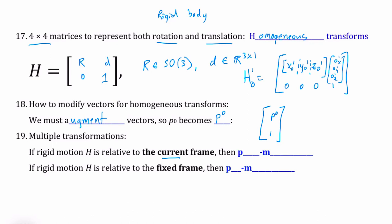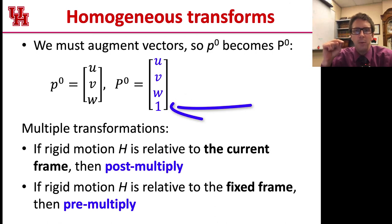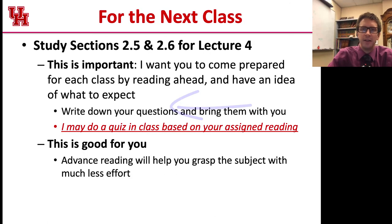Now we get to follow the same thing that we've learned so far. So if the rigid motion H is relative to the current frame, then we will post-multiply. If it's to the fixed frame, then we will pre-multiply. So you see that if your P0 is U, V, W, then we're just going to put a 1 underneath that to make a 4 by 1 vector. So I want you to study sections 2.5 and 2.6 for our next lecture, and we're going to work on some in-class problems when they come.